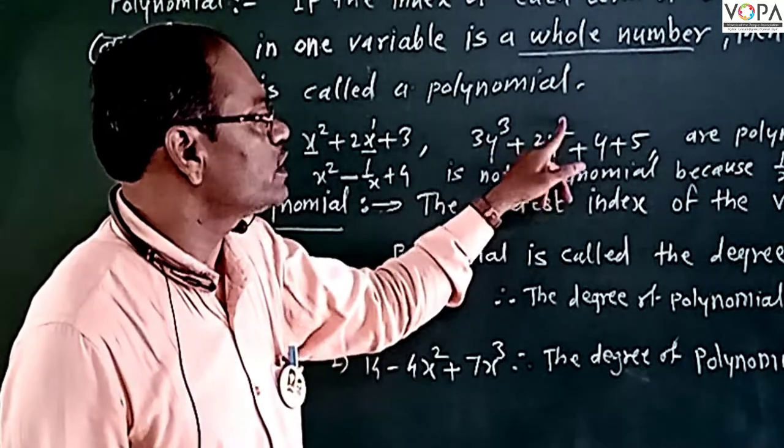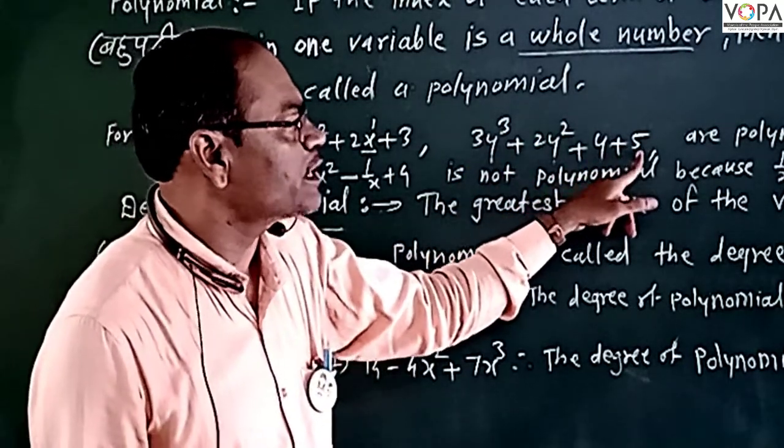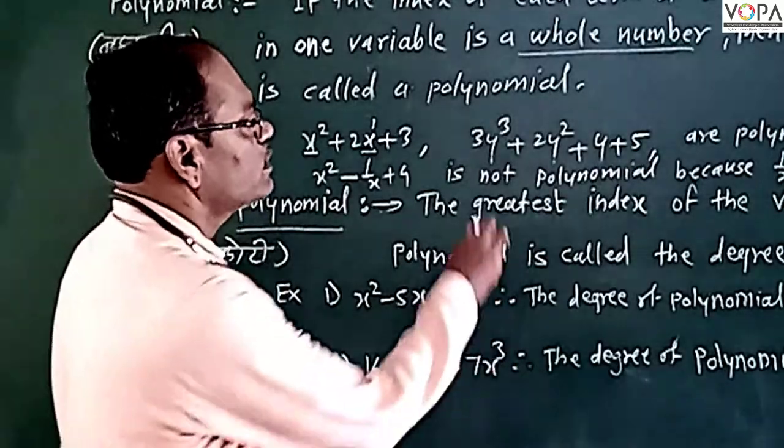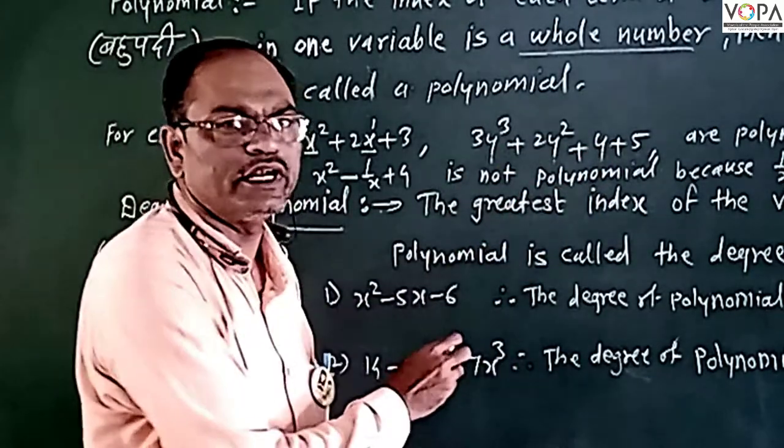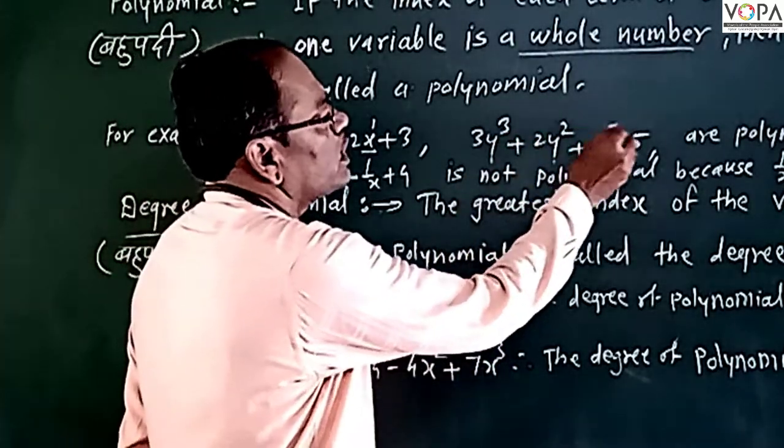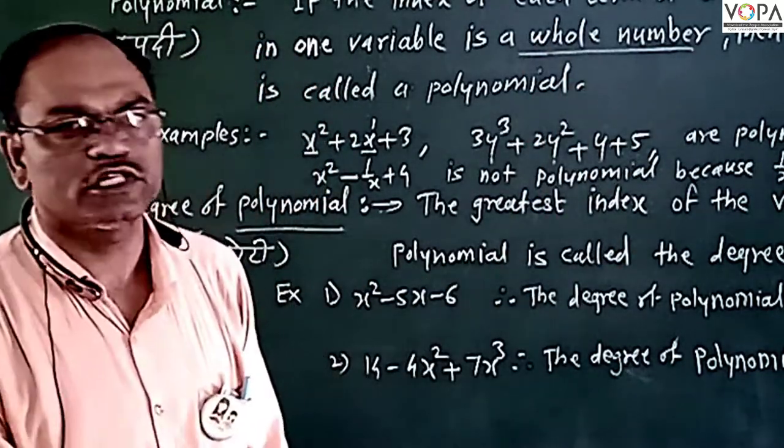Another example: 3y cube plus 2y square plus y plus 5. The variable is y, with index 3, 2, 1, 0. Therefore it is a polynomial.